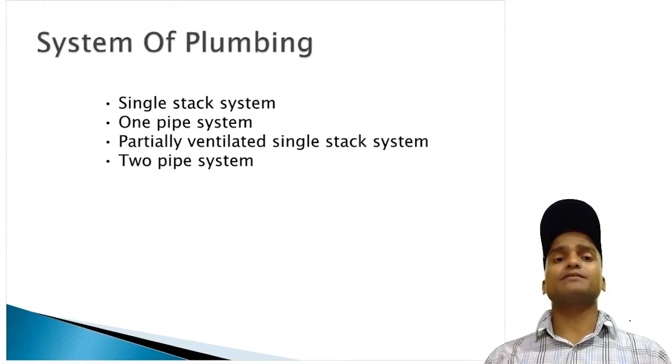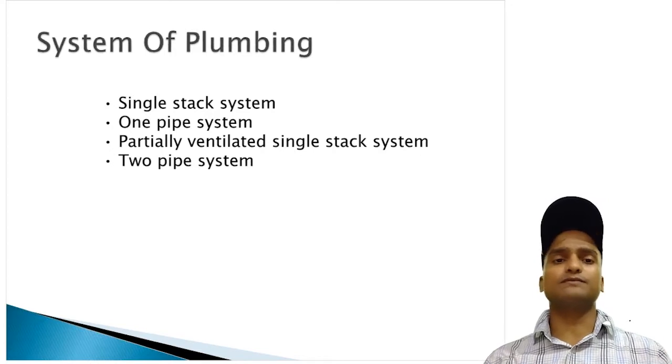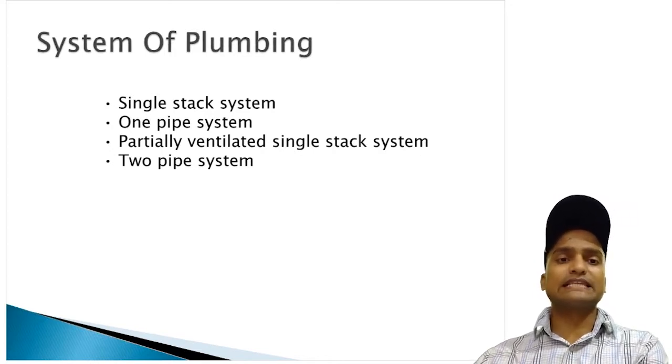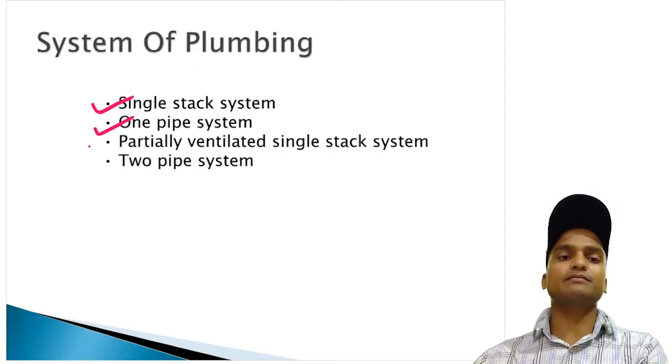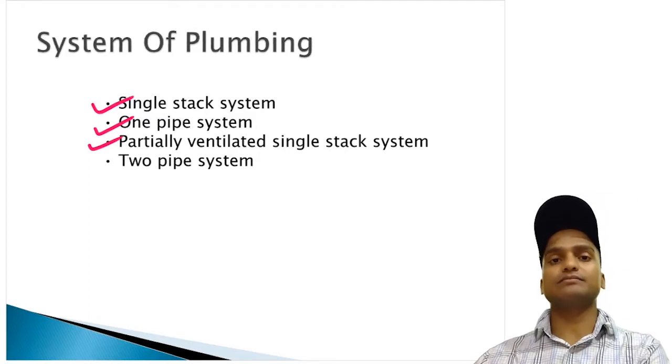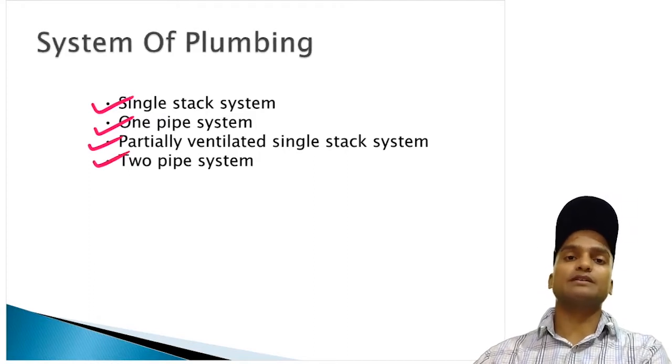In total there are four different systems of plumbing and in any construction of plumbing system we adopt any one out of these four. The first one is the single stack system, second one is the one pipe system, third one is the partially ventilated single stack system, fourth one is the two pipe system.